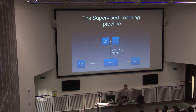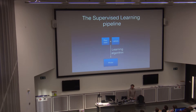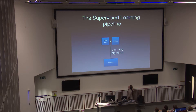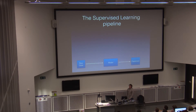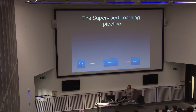This is called the supervised learning pipeline. You have your model. You feed in data which is labelled with the real truth of what the function should do. And then once you've got your model, you get data that no longer has labels and you can spit out a prediction of the output.